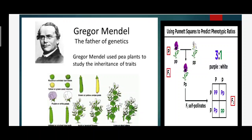For studying different genetic concepts, Mendel used pea plants, because pea plants have seven contrasting characters. Regarding seeds, there are two varieties: round seeds and wrinkled seeds. Regarding seed interior, one variety has yellow seeds and another has green seeds. Regarding flowers, some plants have purple petals and others have white petals. Regarding pods, some are inflated and some pinched. Regarding flower position, some are axial and some are terminal.